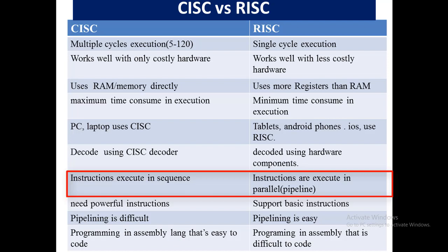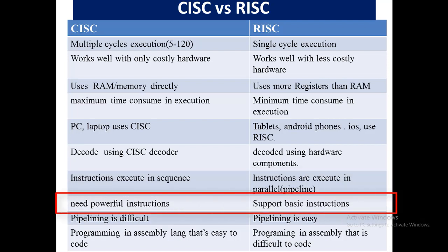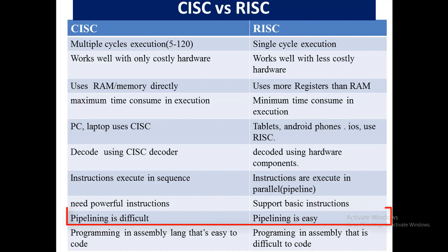In CISC, it needs powerful instructions to perform powerful operations. While on the other hand in RISC, it uses basic instructions that are very easy and take very less time to execute. So in CISC, pipelining is very difficult because all the instructions execute one after the other, while in RISC pipelining is very easy.